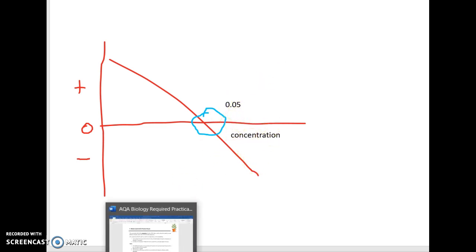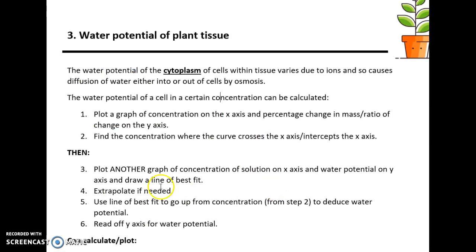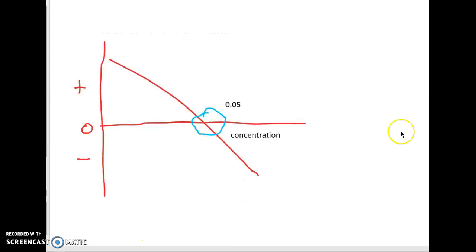In order to work out the water potential inside that cell, we need to draw a second graph — concentration on the x-axis against water potential on the y-axis. Draw a line of best fit, extrapolate, and then use the line of best fit to go up from the concentration we deduced to read off the water potential on the y-axis.